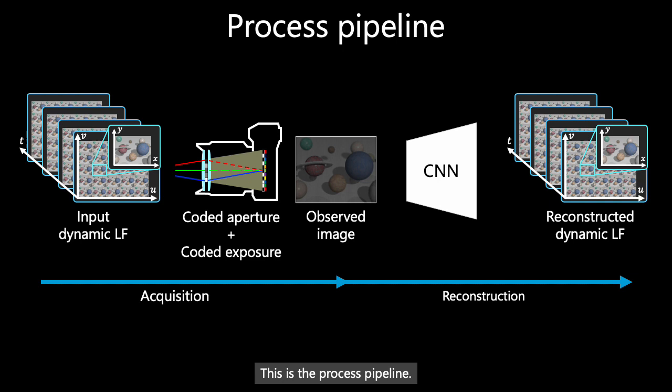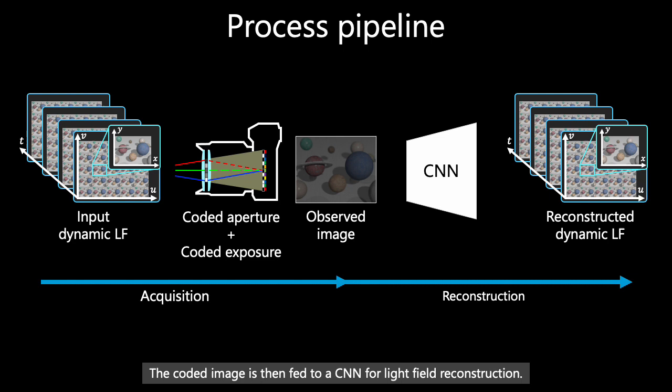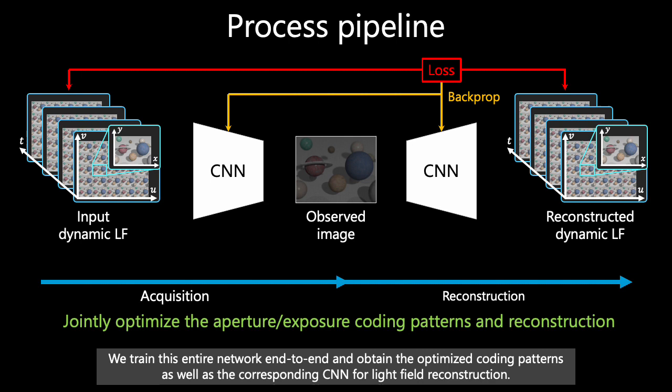The dynamic light field of 25 viewpoints over 4 frames is compressed into a single coded image. The coded image is then fed to a CNN for light field reconstruction. We model the image acquisition process as a CNN and simultaneously optimize the coding patterns and reconstruction process. We train this entire network end-to-end and obtain the optimized coding patterns as well as the corresponding CNN for light field reconstruction.